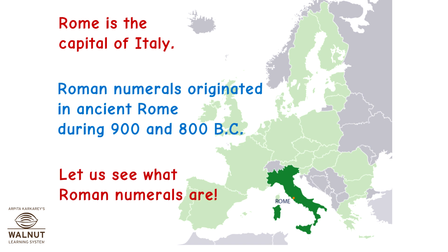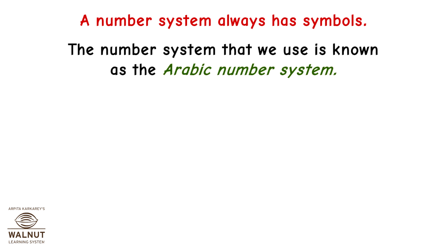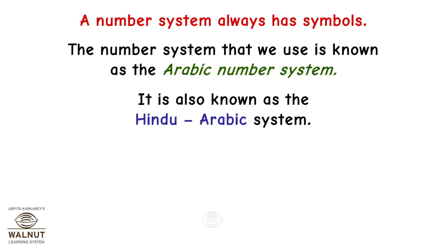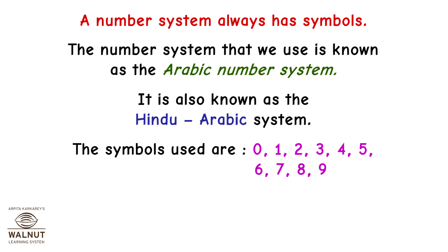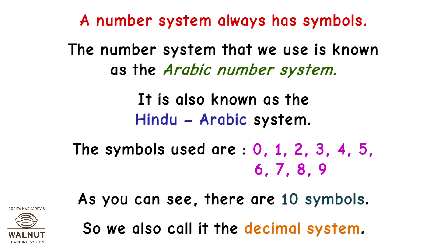Let us see what Roman numerals are. A number system always has symbols. The number system that we use is known as the Arabic number system. It is also known as the Hindu-Arabic system. The symbols used are 0, 1, 2, 3, 4, 5, 6, 7, 8, and 9. As you can see, there are 10 symbols, so we also call it the decimal system.